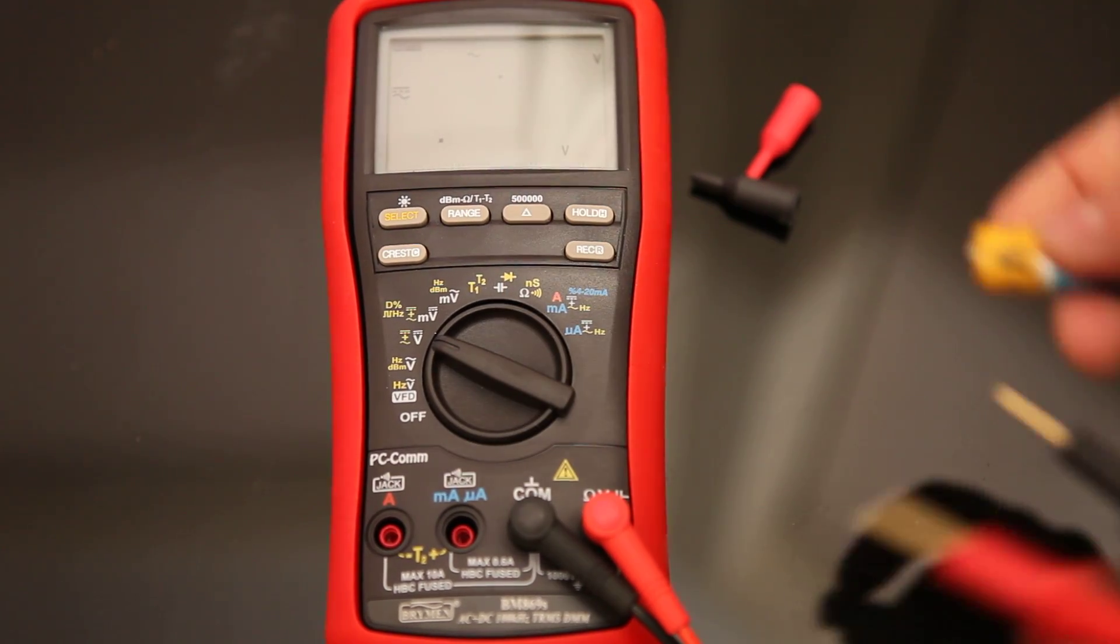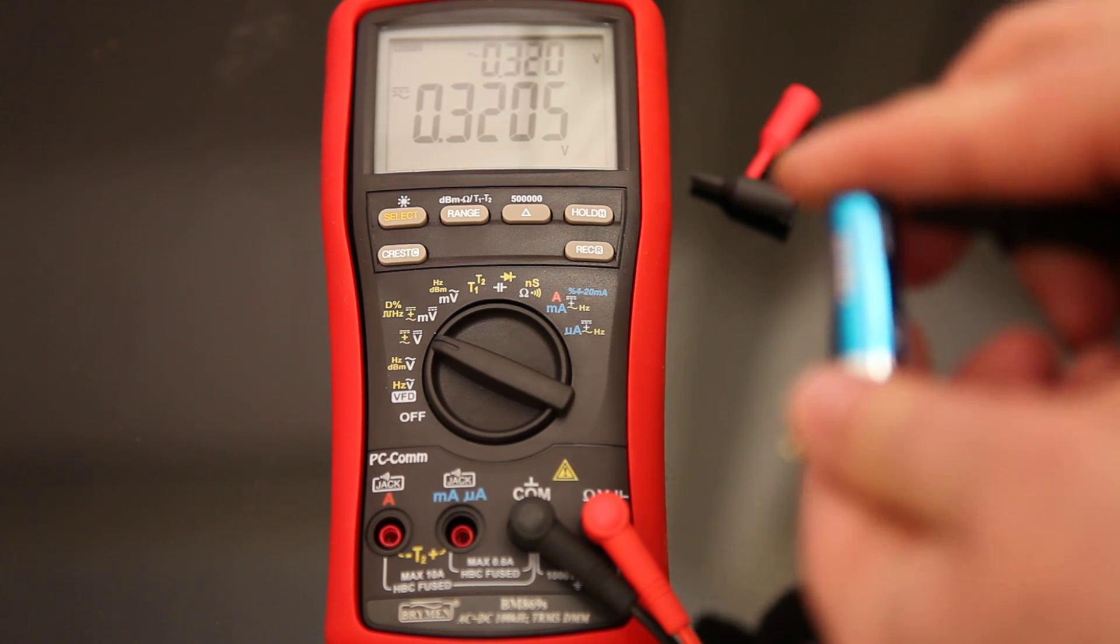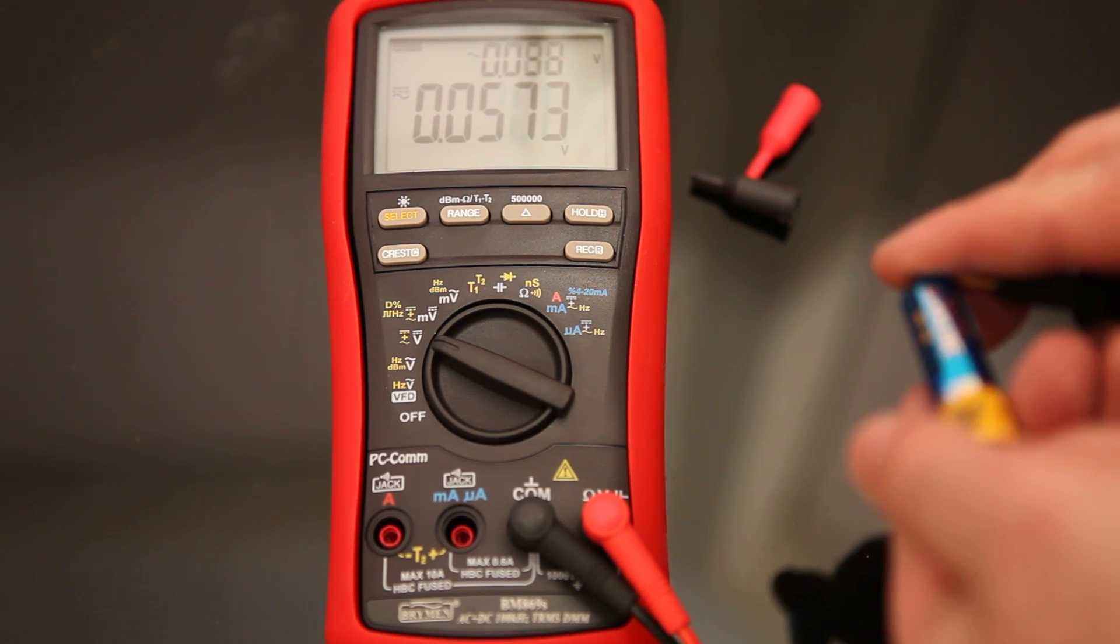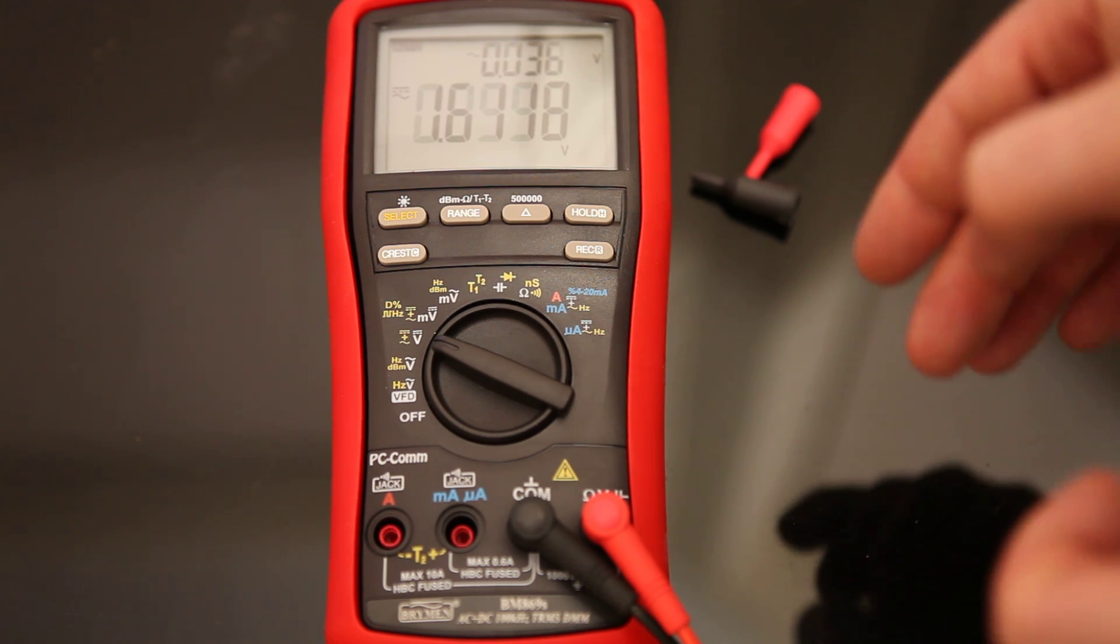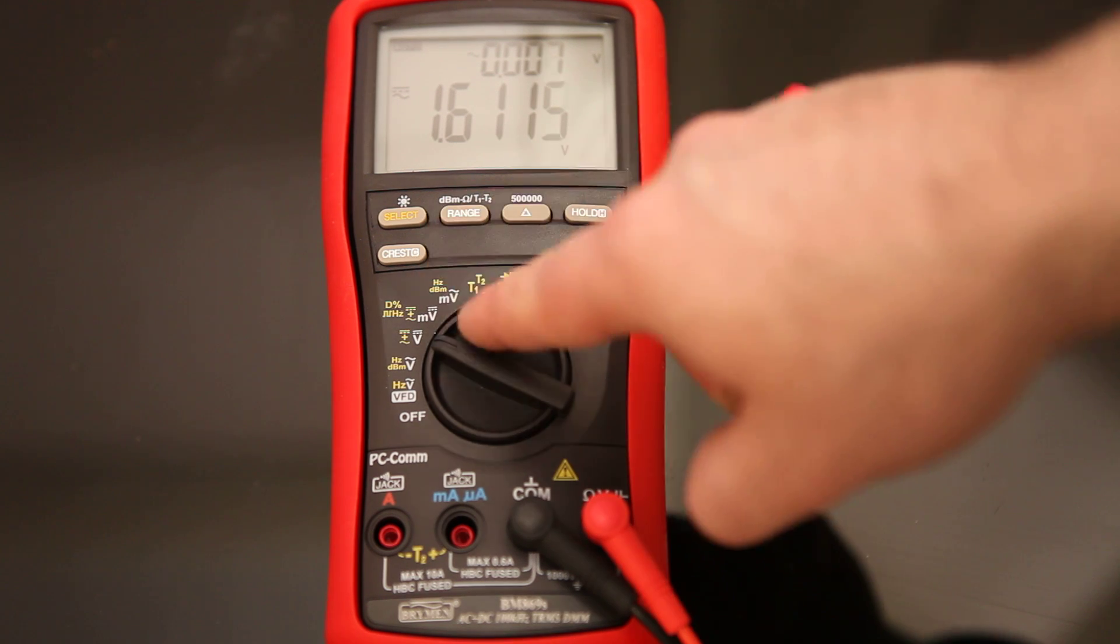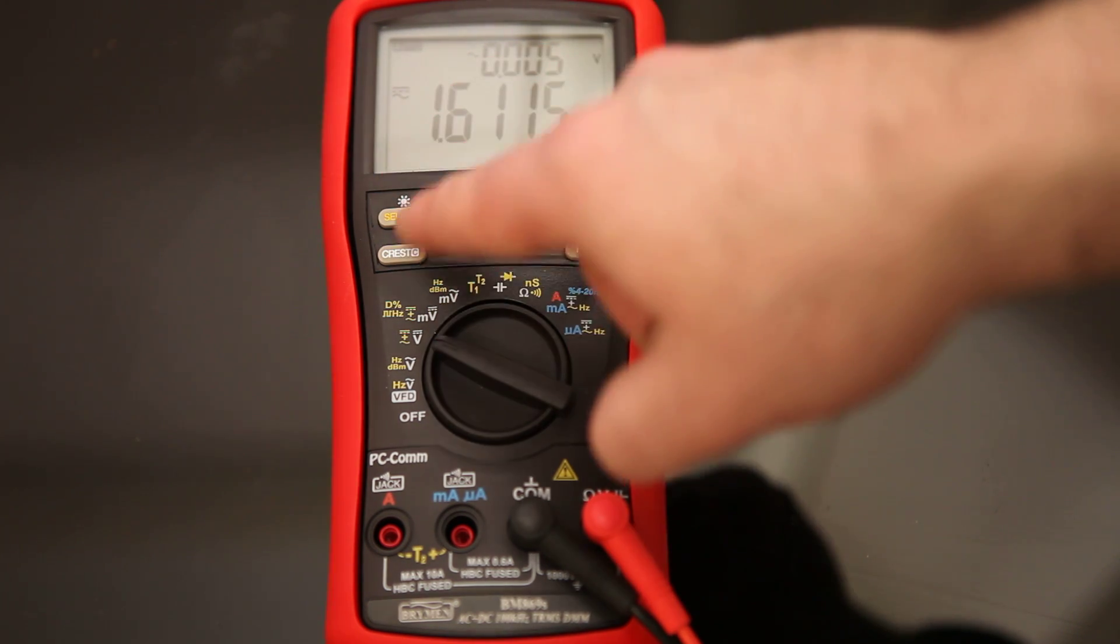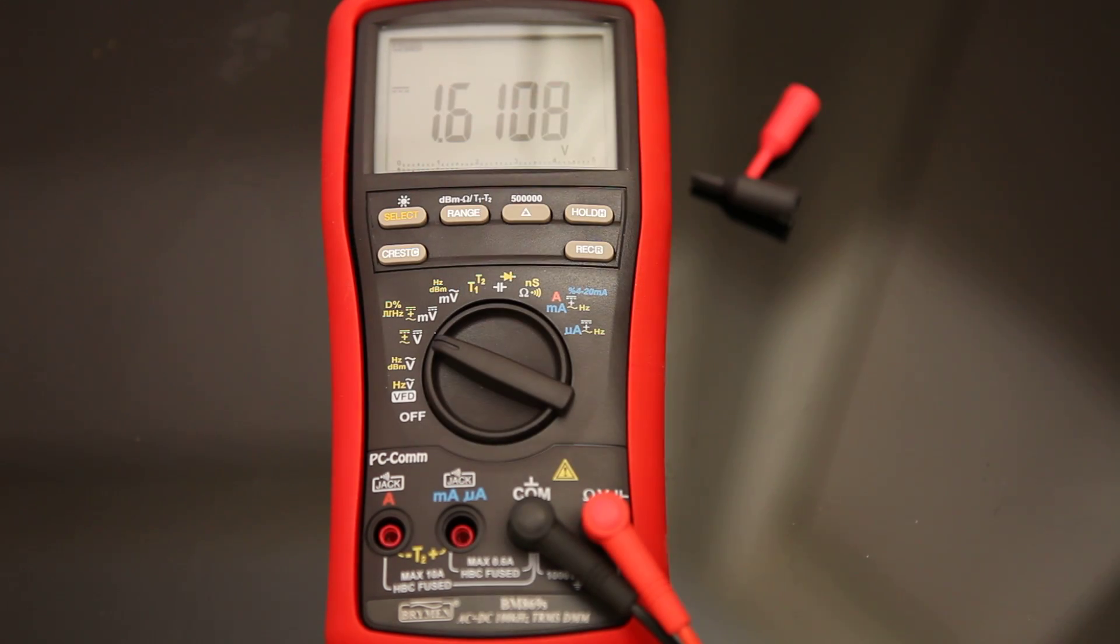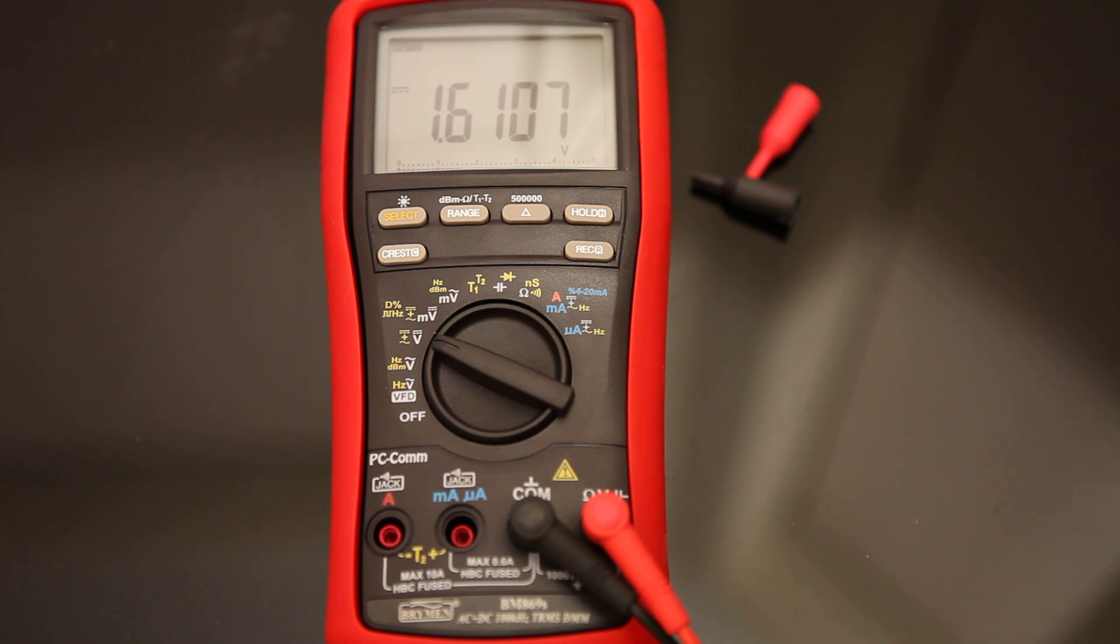If I put it onto voltage mode, we'll test it on this battery. And it's got auto ranging and all the other stuff that you could imagine, which is all a bit new to me, because my old one just had one range. So we want DC voltage, select 1.61 volts on this battery.